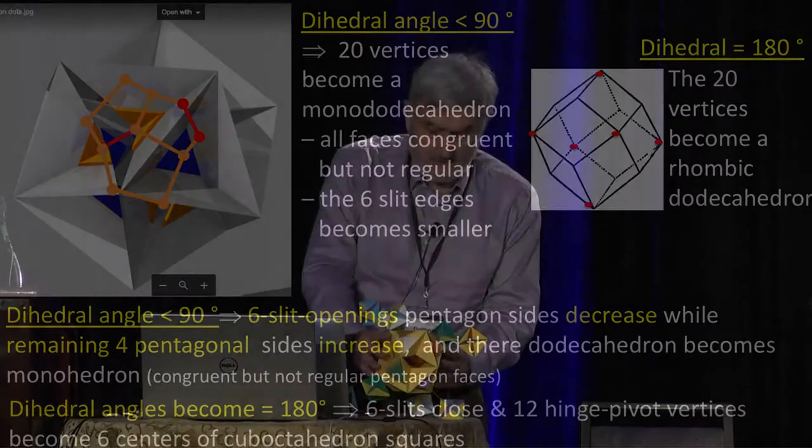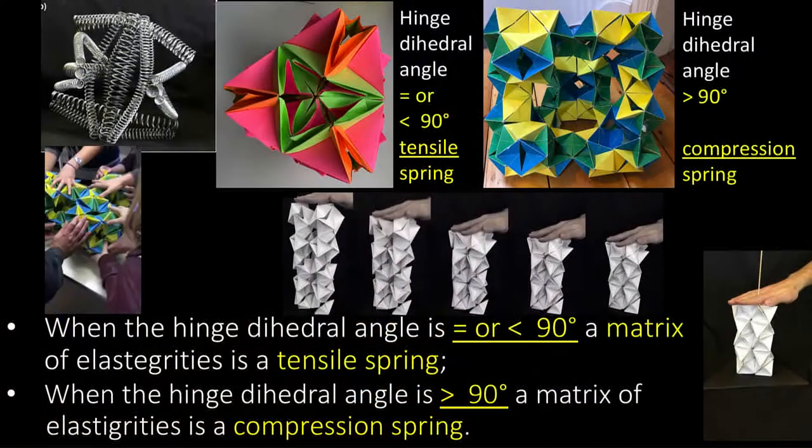And when it becomes a cuboctahedron, you get the rhombic — so the rhombic is when the side of the pentagon goes to zero. That's the significance: when the dihedral angle is less than 90°, it becomes tensile; otherwise it becomes compressive. So it has applications — it's not just pure math.